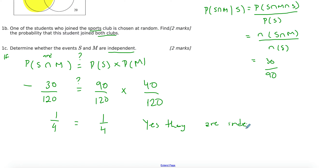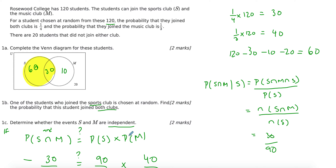So yes, they are independent. If you need to test whether two things are independent, find the intersection probability and find the probability of each one separately, then multiply them. If they end up being equal, those two events are independent. What this means is that the probability of picking someone in sport does not influence the probability of picking someone in music.